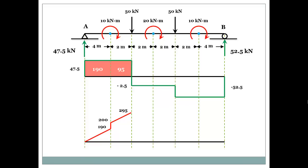Continuing along, we encounter a negative area under the shear diagram. Adding this algebraically — subtracting 5 from 295 — gives 290. Then we encounter the 20 kN·m clockwise moment, so we add it to 290, giving 310. Next there is another small negative area of minus 5; adding it to 310 gives 305.